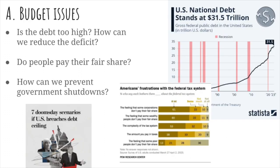The first major problem associated with the national government that we should talk about is the budget. The biggest issue is the fact that we're spending way more money than we're bringing in. One question that it's fair for fiscally-minded people to ask is, is the debt way too high, how can we reduce the deficit? The national debt stands at about $31.5 trillion, which is an enormous sum of money. Our federal budget every year is over $4 trillion, but it's still growing, and many people think that the debt is getting out of control.